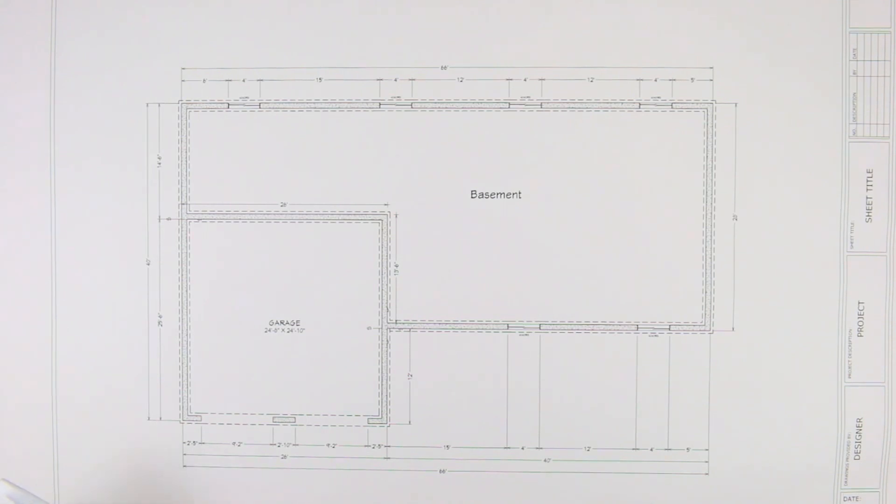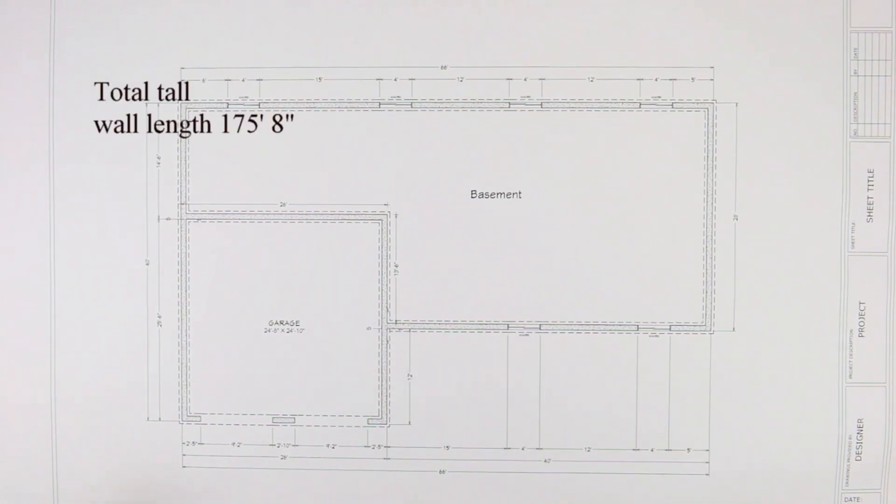Let's get started. Here I have a foundation plan. My total wall length on my tall wall is 175 feet 8 inches. The total height is 9 feet 10 inches and the thickness of the wall is 8 inches.